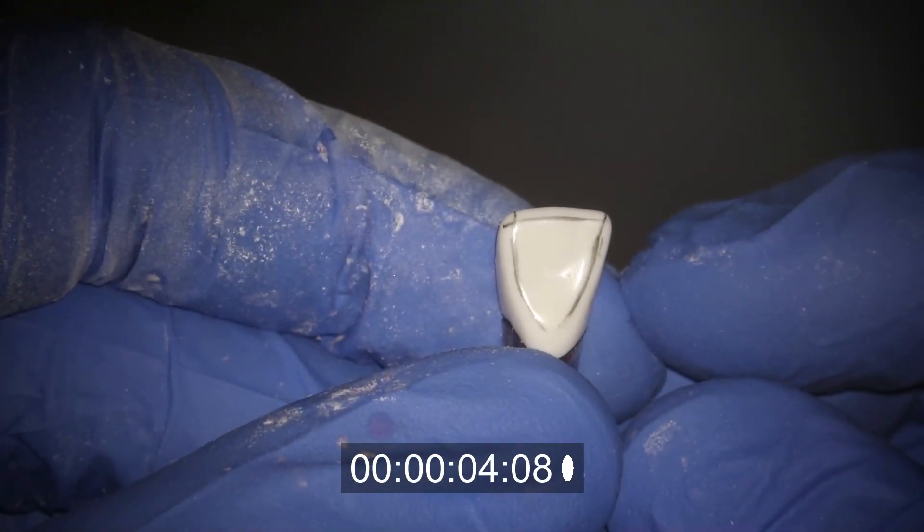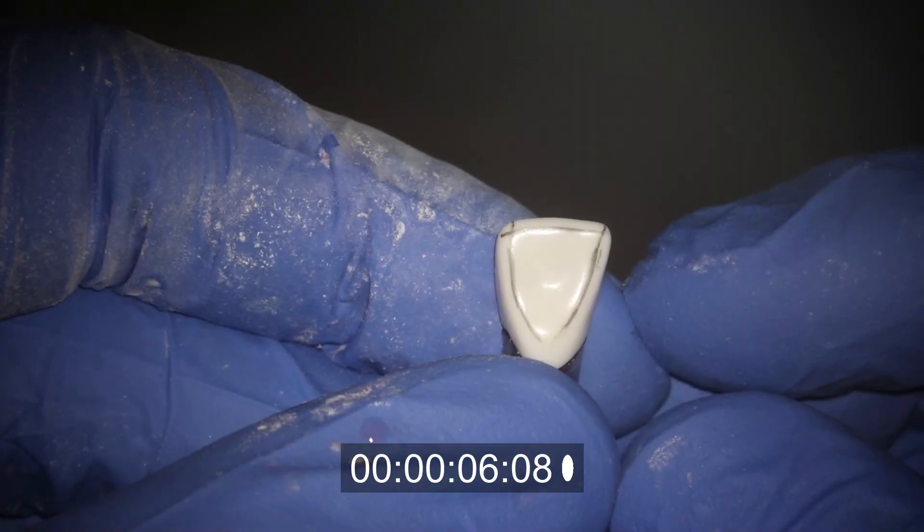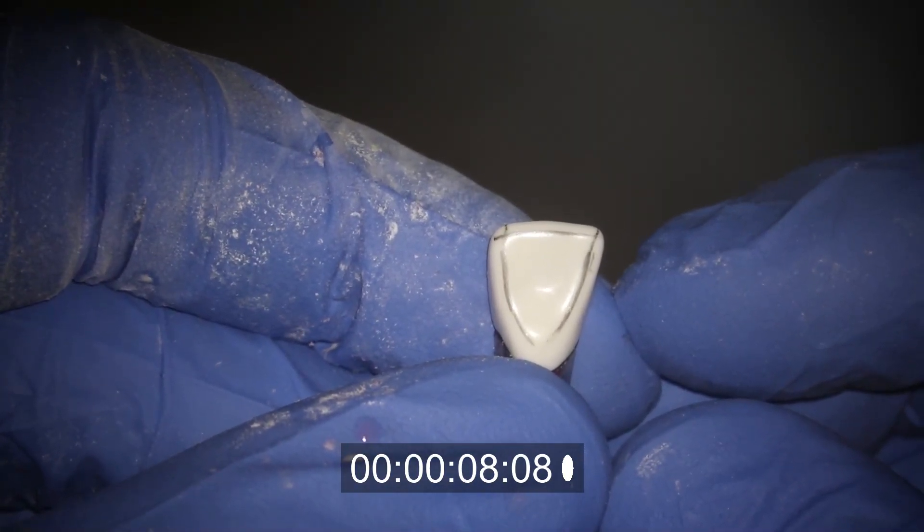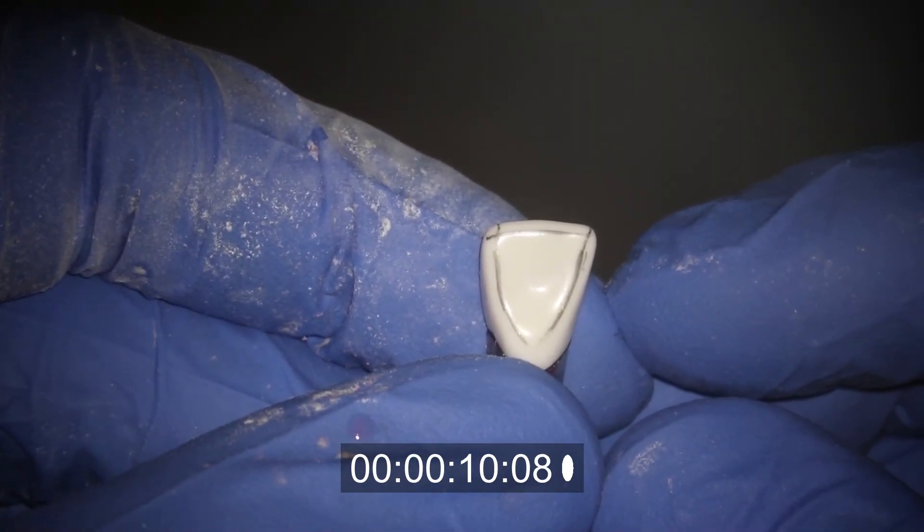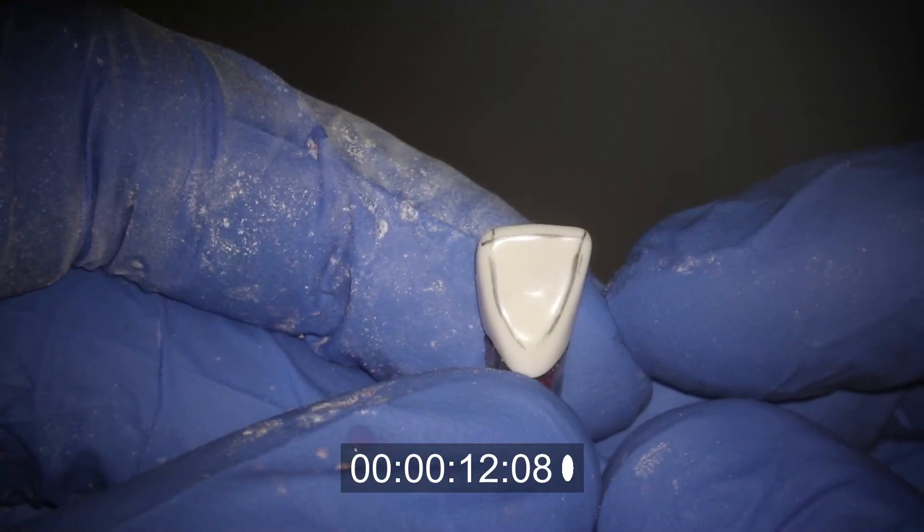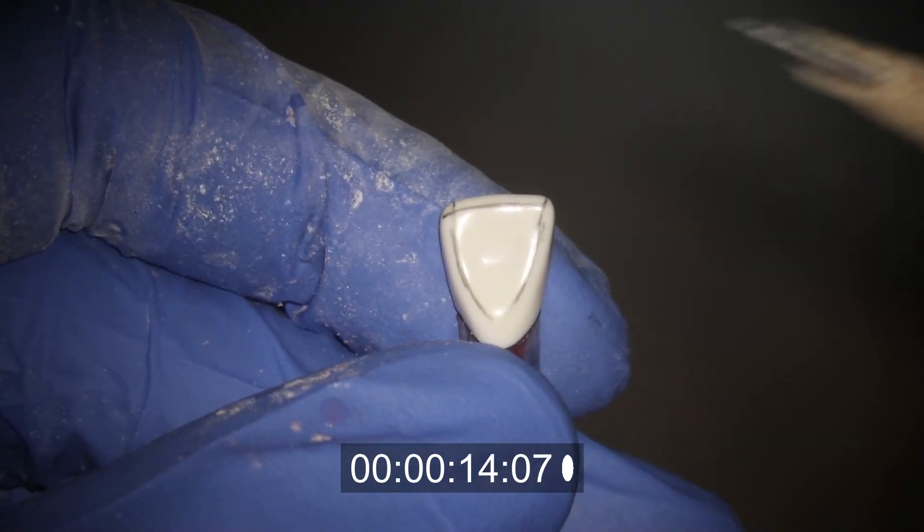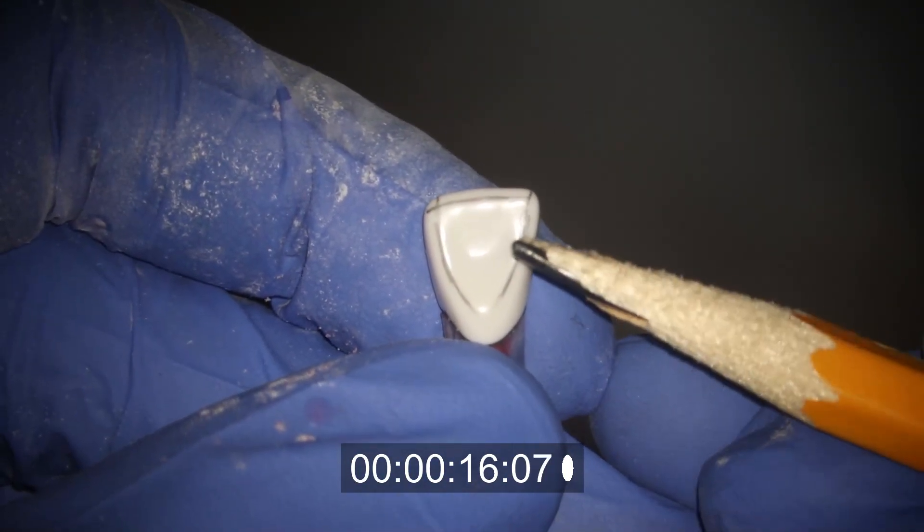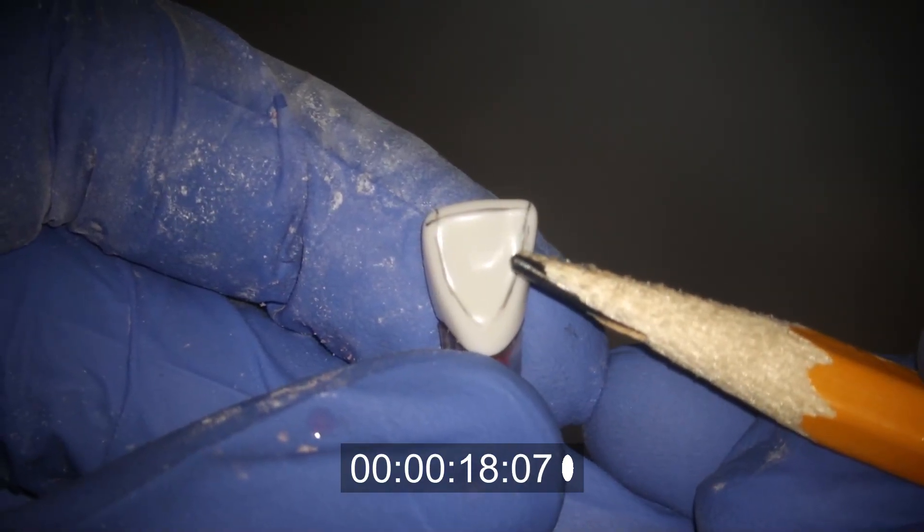So now I'm moving on to the anterior tooth here. You're going to want to go ahead and make your reference points for grading first. So we've got the marginal ridges all the way down in the cingulum and then the incisal edge. You just want to note that it's not all the way to the edge of the tooth. It's at the height of contour and that kind of changes your measurement.